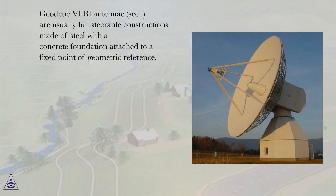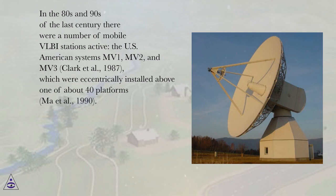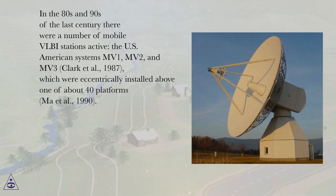Geodetic VLBI antennae are usually fully steerable constructions made of steel with a concrete foundation attached to a fixed point of geometric reference. In the 80s and 90s of the last century there were a number of mobile VLBI stations active — the US-American systems MV1, MV2, and MV3 (Clark et al., 1987) — which were eccentrically installed above one of about 40 platforms (Ma et al., 1990).